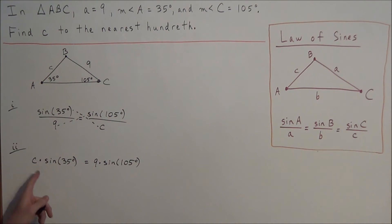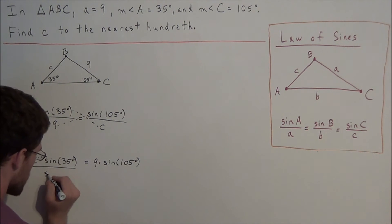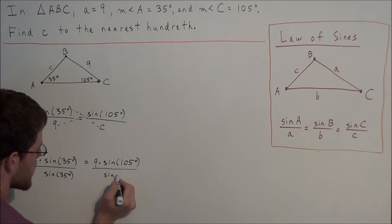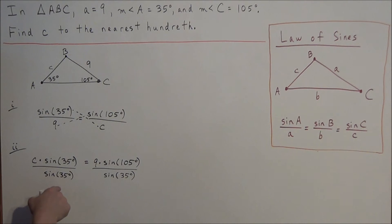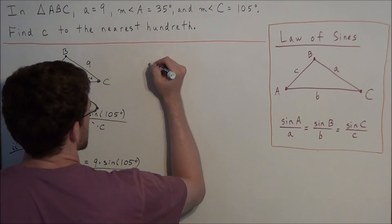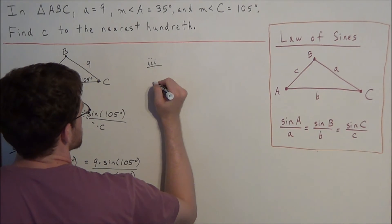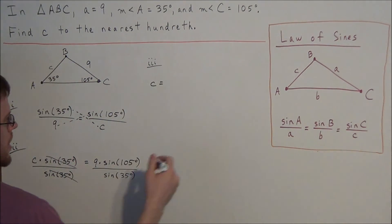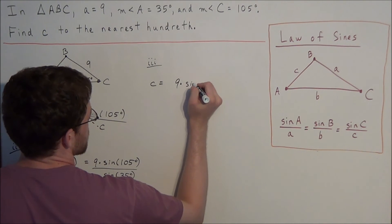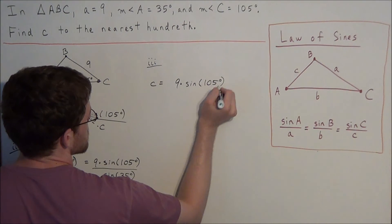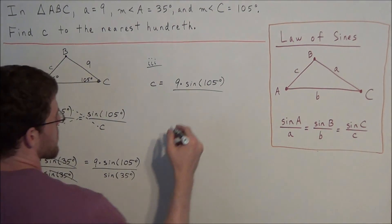So now in order to solve for lowercase c, we're going to divide by sine of 35 degrees on both sides. And now on the left hand side, when we divide by sine of 35 degrees, sine of 35 degrees divided by sine 35 degrees will cancel out. So for the next line, we have that c is equal to 9 times sine of 105 degrees divided by sine of 35 degrees.